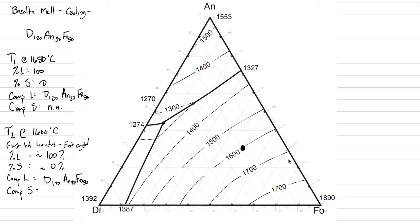The composition of the solid is still Fo100 — that's going to change once we hit the cotectic, but for now we're still in the forsterite domain. The composition of the liquid should become more poor in forsterite. At this point we're going to be at approximately diopside 28, forsterite 24, and anorthite 48. So the C's are progressively getting closer to the eutectic.